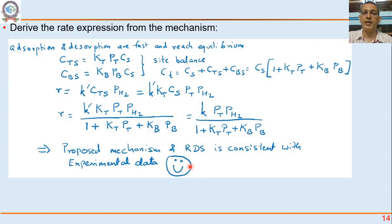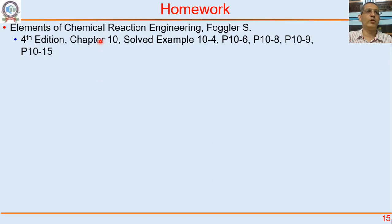Look at the last slide of the last lecture once again if you want — this is what we have done. We will stop this lecture here. You must practice more problems from Chapter 10, 4th edition: problems 10-4, 10-6, 10-8, 10-9, and 10-15. Solve these five homework problems for more practice. We have come to the end of Part 4 of our syllabus. The next part is going to be diffusion and reaction in the catalyst. Do not just watch the lectures — solve everything yourself.